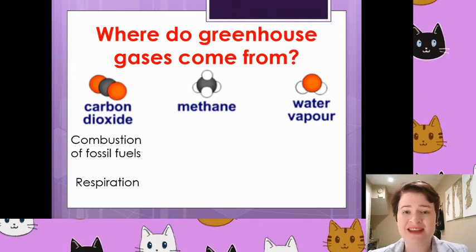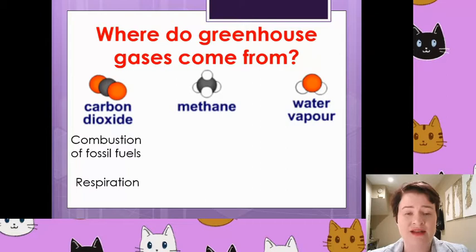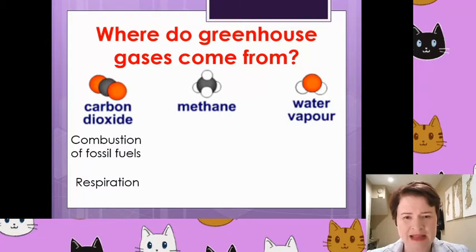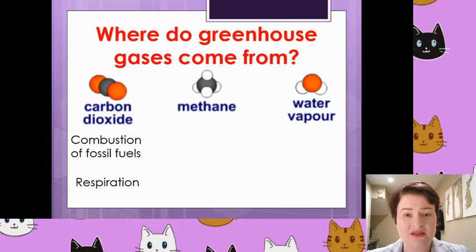Methane is CH4 — that's one carbon with four hydrogens around the outside. You can see on the diagram on screen there's a black blob in the middle and four circles around the outside. The four white circles are hydrogen and the black blob is carbon.